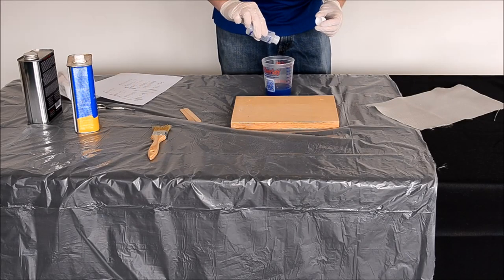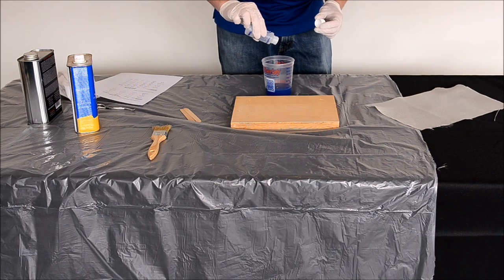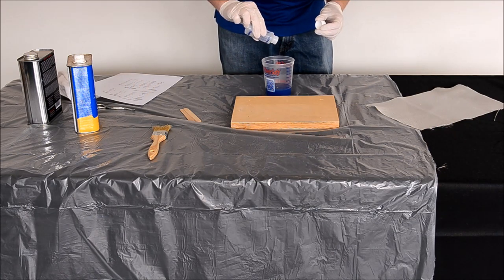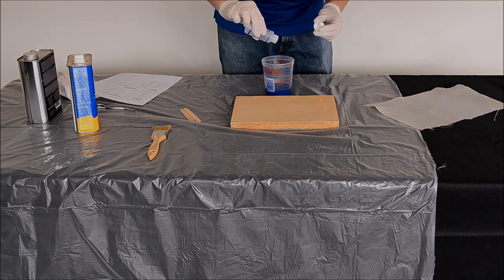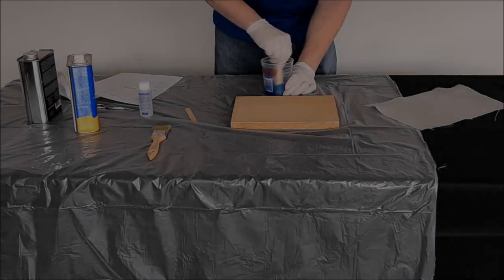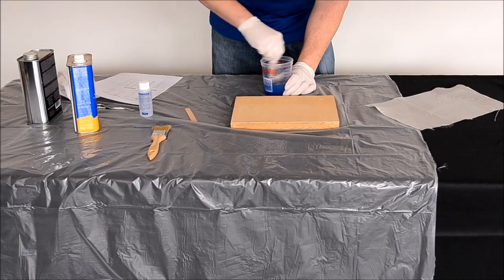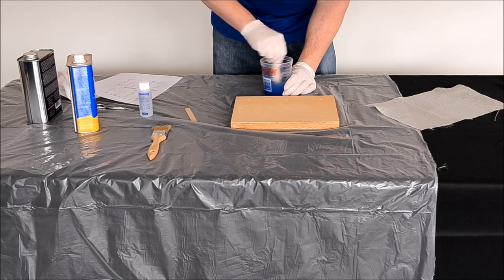The amounts of polyester resin and MEKP do not need to be quite as exact as it would need to be when working with epoxy resin. Using a stir stick, thoroughly mix the resin and MEKP for several minutes.